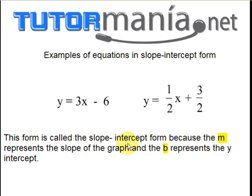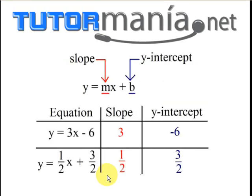Here are two examples of equations in slope-intercept form. One is y equals 3x minus 6 and the other is y equals 1 half x plus 3 halves. This form is called slope-intercept form because the m represents the slope of the graph and the b represents the y-intercept. And here's a little chart that can help you identify the slope and the y-intercept when it's in y equals mx plus b form.